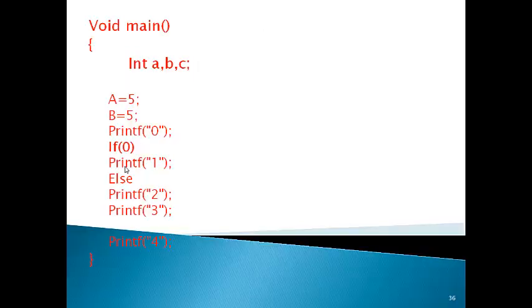Now here we have the else with a body. Note that variable names use capital letters (P, E). When you write this, you can type it in the computer and in the file. Here our condition is false, so it will print 0, 2, 3, and 4.